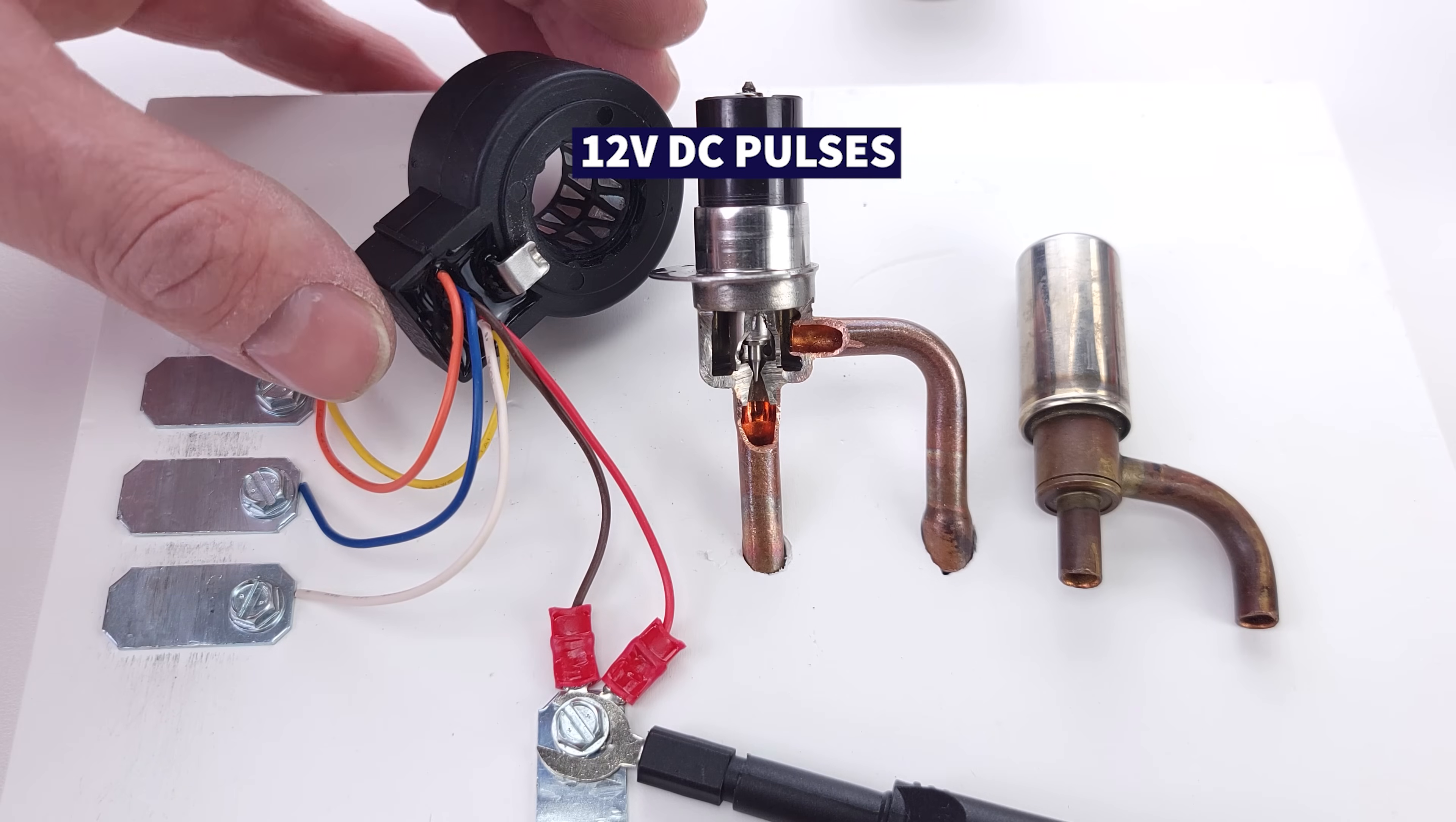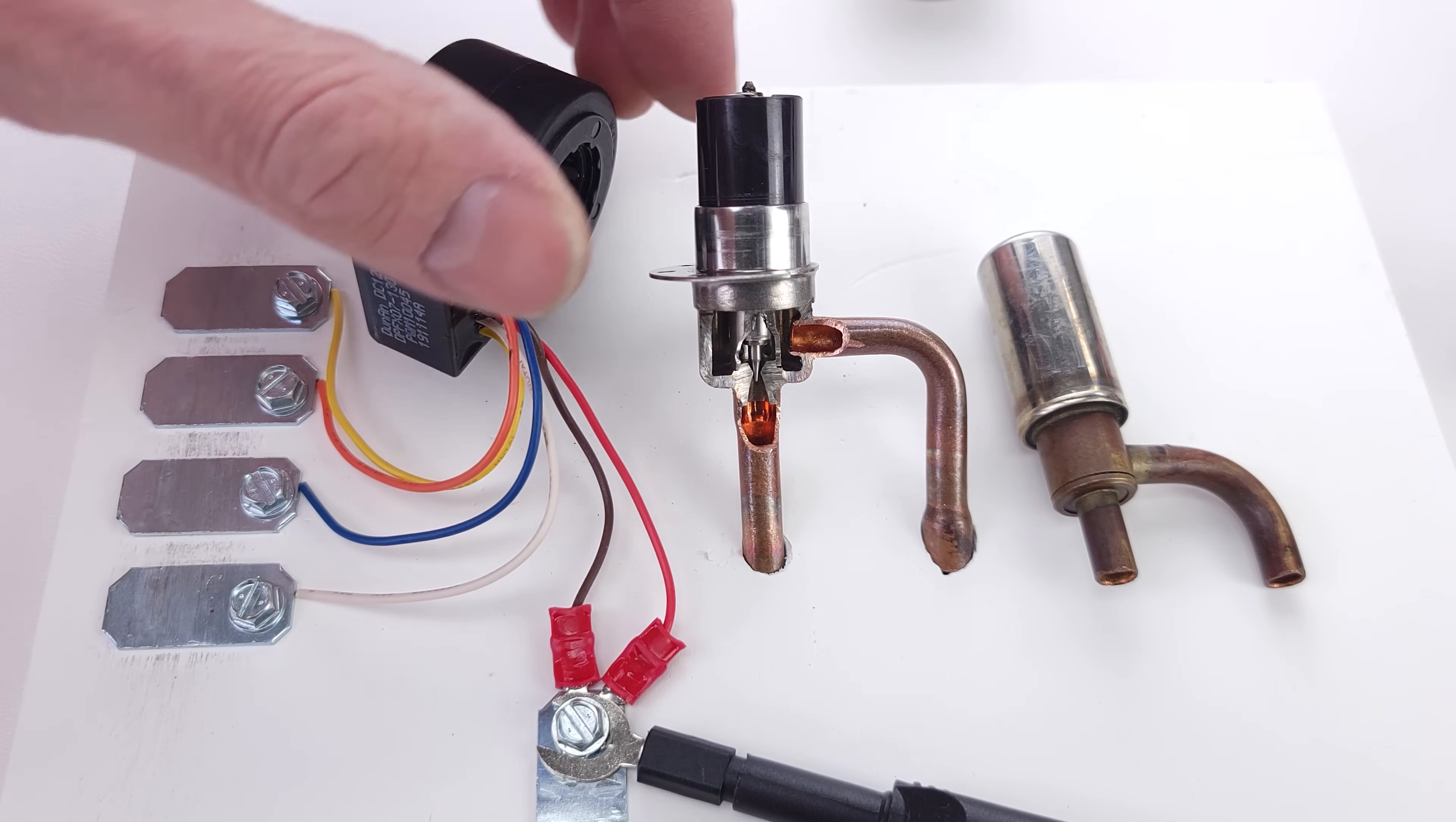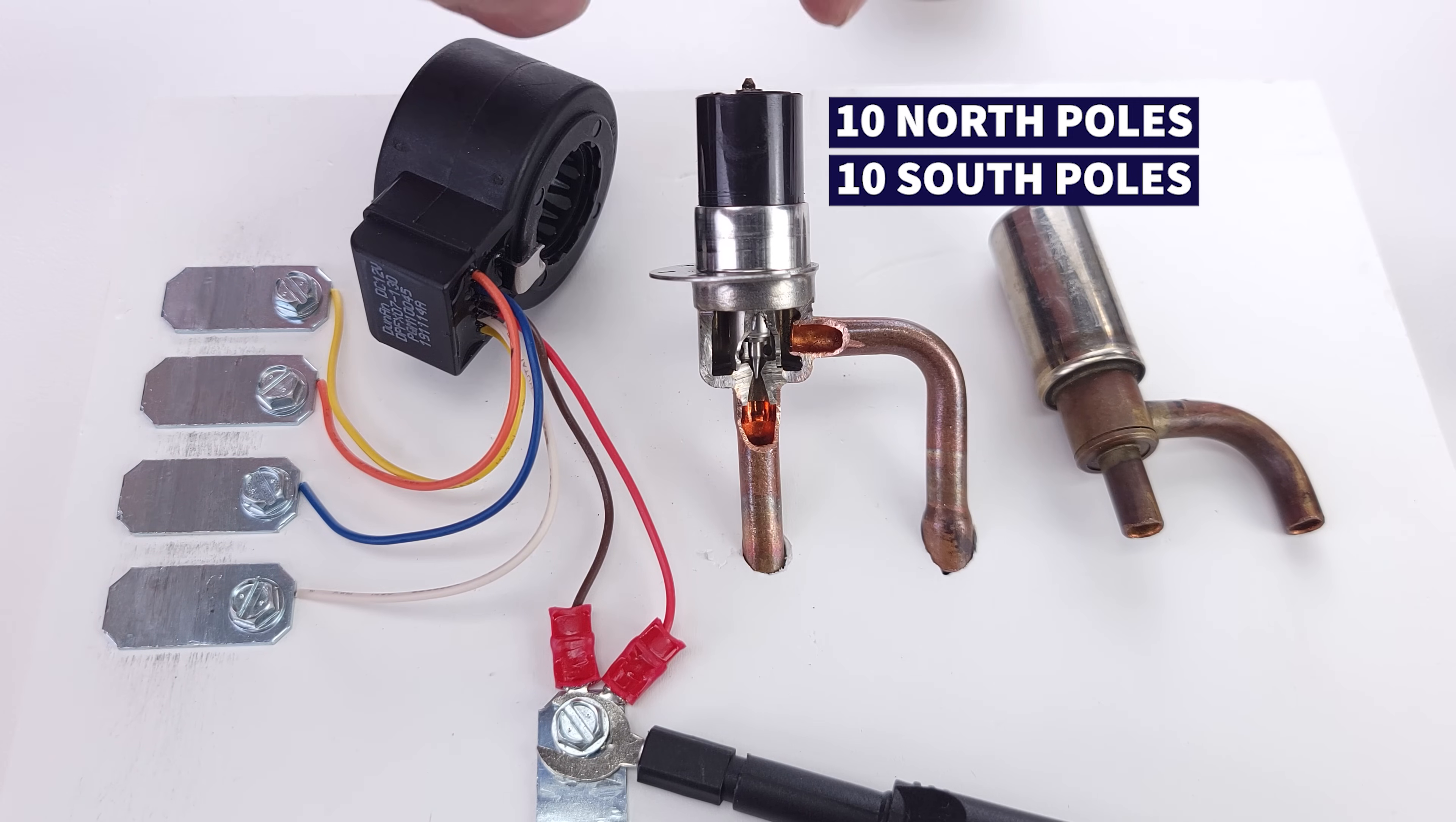It uses 12-volt DC pulses of electricity. Inside here there are little teeth. In this one, there are 40 teeth total. I cut the end cap off the top so we could see inside. You don't normally have access to the magnet; it's always in a sealed stainless steel shell. This is a permanent magnet with 10 north poles and 10 south poles, and they're offset from each other.